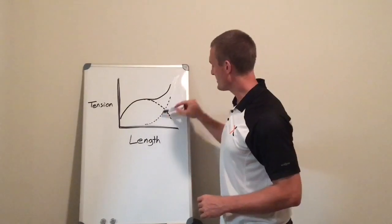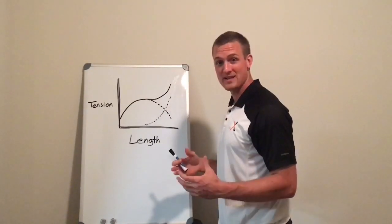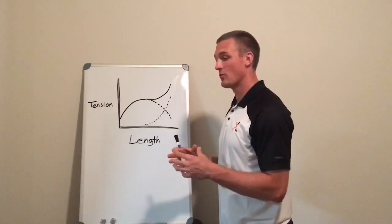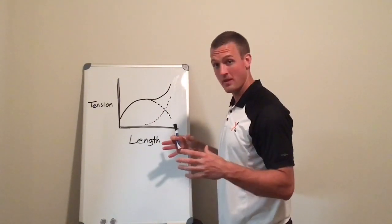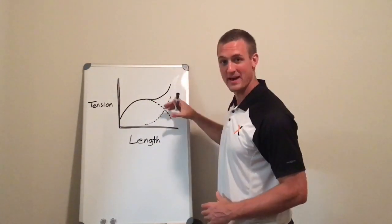This curve over here is what we call passive tension. It's a product of the non-contractile components that comes from when those components start to stretch. And then this curve here is the total tension, the sum of the active and passive.